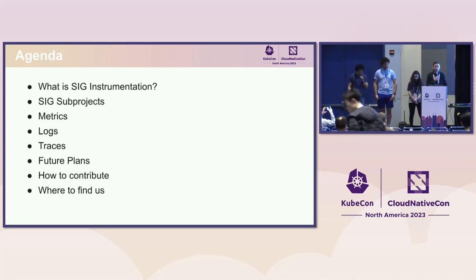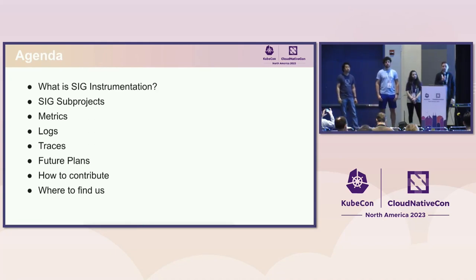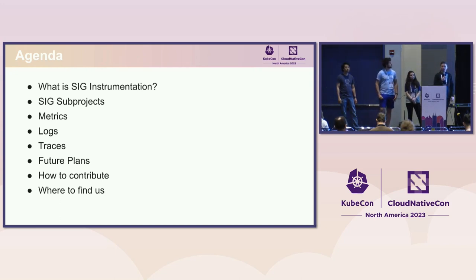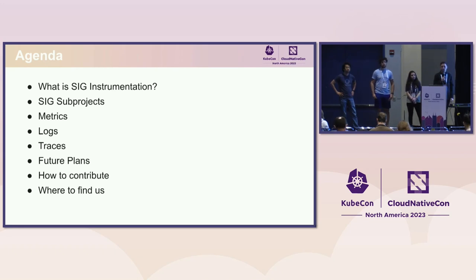Our agenda for today is to first go through a quick introduction of SIG instrumentation — our group, what we do and what's our purpose — and then we'll dive into the concrete subjects, which are the sub-projects we are responsible for, as well as the three principal observability signals we see every day: metrics, logs, and traces. Then we'll go over our future plans and how you can help and contribute.